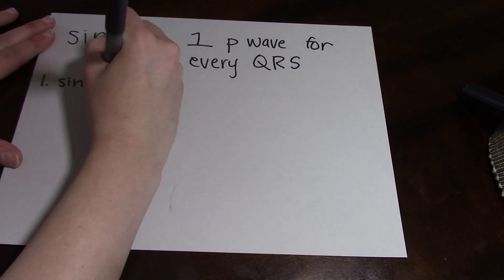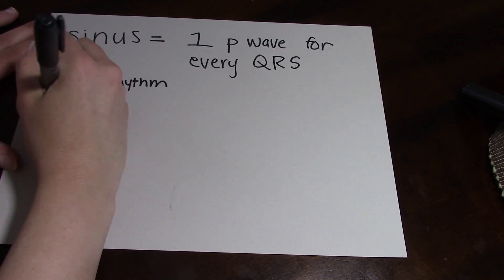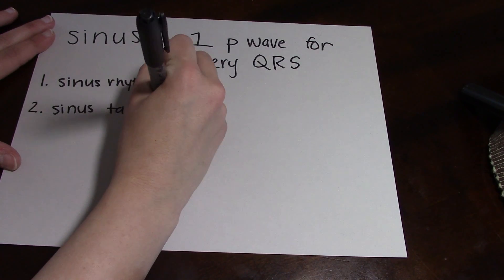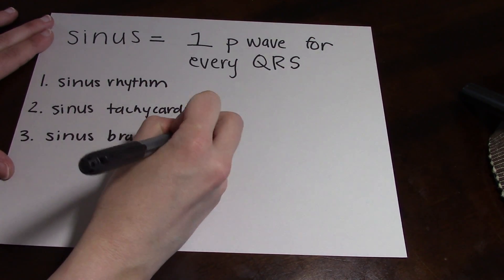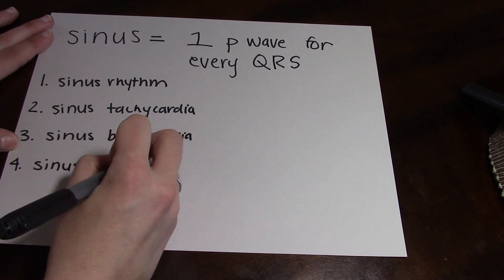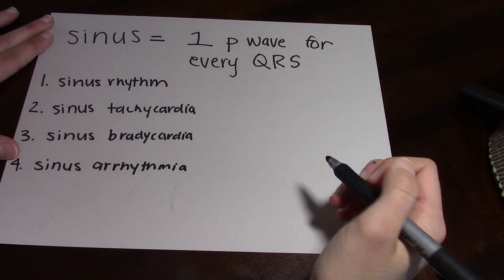So there's basically four different sinus rhythms: your normal sinus rhythm, sinus tachycardia, sinus bradycardia, and then your sinus arrhythmia. I'm going to be going over the differences between those four in just a moment.